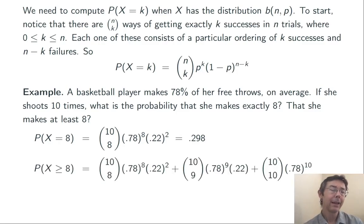To do the probability that X is greater than or equal to 8, that she makes at least 8 shots, we're going to add up the probabilities that she makes 8 shots, 9 shots, and 10 shots, like so. Simplifying that all out, we get that the probability that she makes at least 8 shots is about 61.7%.